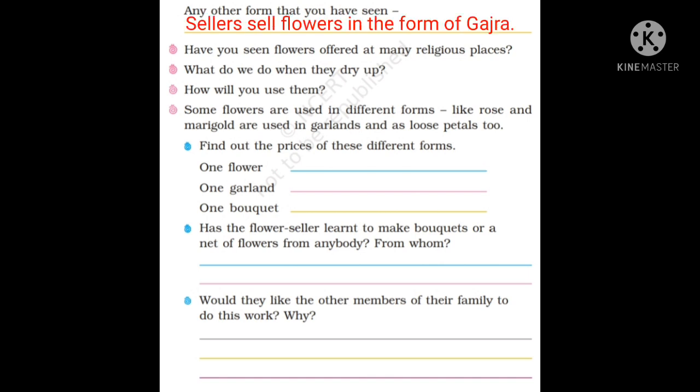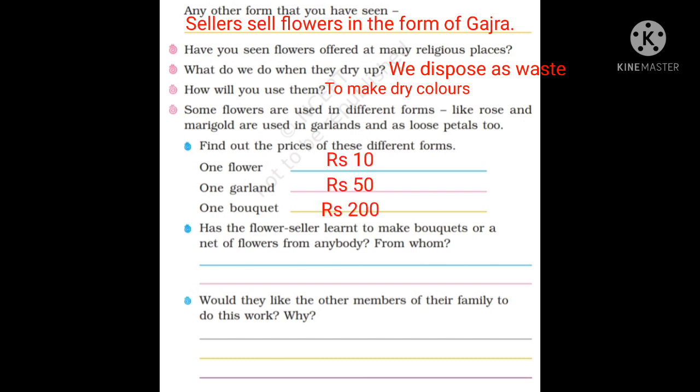We use flowers on different occasions such as birthdays, religious ceremonies, marriages, and many more. You can see on the left hand side the different occasions and the different types of flowers used. For example, when we go to a marriage, we take a bouquet of flowers. There are so many uses of flowers, and to fulfill all these needs, we want lots and lots of flowers.